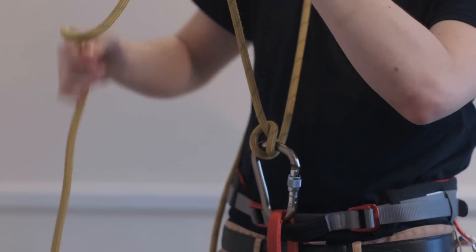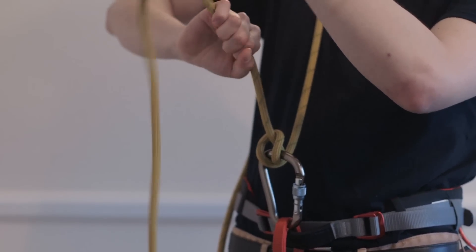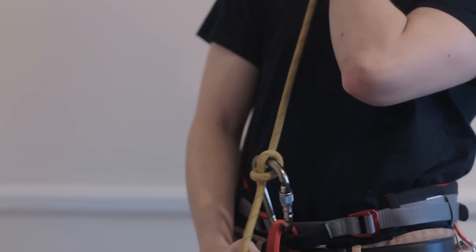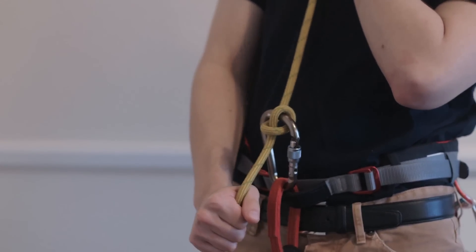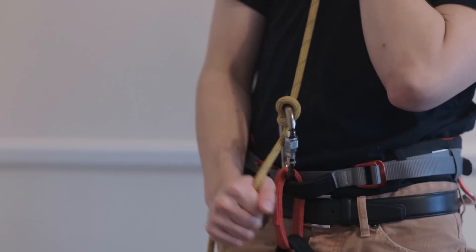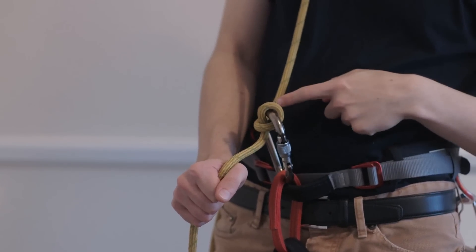Now if the climber falls in the top rope situation, our natural reaction is to bring the brake hand down, like you would do with a normal ATC or GriGri. Now that's fine, it will lock off and catch the climber, but there's a lot less friction in the Munter Hitch.